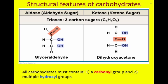All carbohydrates must contain two structural features: the first being the carbonyl, and the second being the hydroxyl group. Carbohydrates are subdivided into two different types of sugars. The first is an aldose sugar, and the second is a ketose or ketone sugar. Aldose or aldehyde sugars contain their carbonyl groups at the terminal end of the carbon chain. The carbonyl group could be at either end — either the first end or the last end. Glyceraldehyde is one example of an aldose or aldehyde sugar.